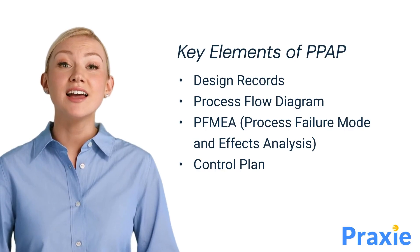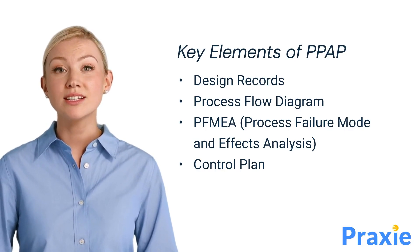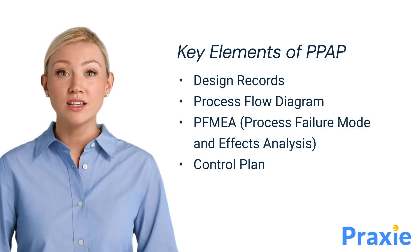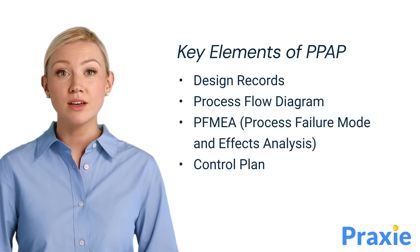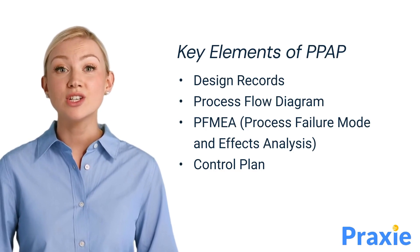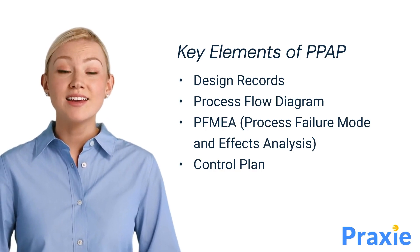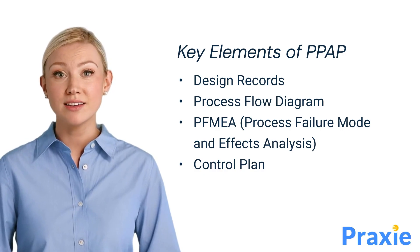There are several key elements in PPAP that must be submitted for approval. These include design records, which define the part specifications; a process flow diagram that shows the production flow; PFMEA, which identifies potential risks; and a control plan that outlines how the process will be controlled to ensure quality.